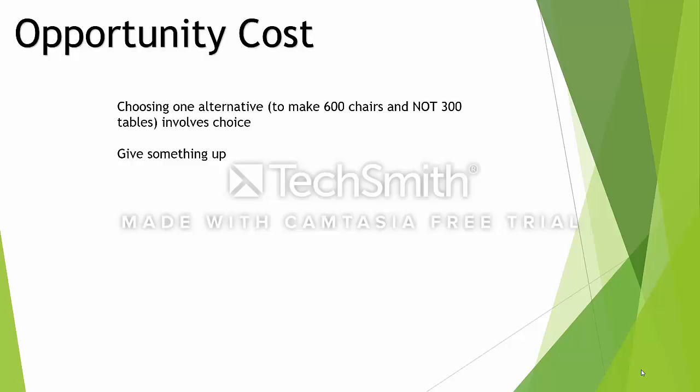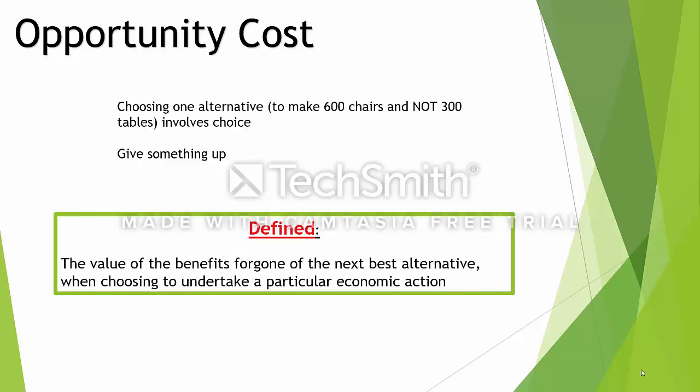So by making 600 chairs we're giving up 300 tables. If we choose to burn that wood for fuel we then can't have any chairs or tables. Any combination of the use of that wood will involve some choices having to be made and something being given up. If we want 150 tables we're going to have to give up a certain number of chairs. In economics, the definition of opportunity cost is the value of the benefits that we forgo — that is, give up — of the next best alternative. So the other thing you left out when choosing one thing is the next best alternative, or the benefits of what you give up by choosing to undertake a particular economic action.